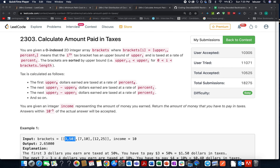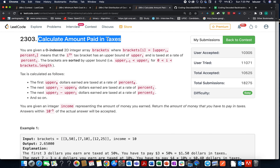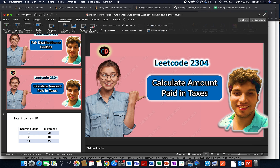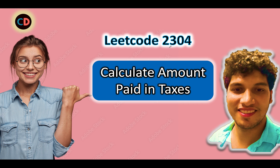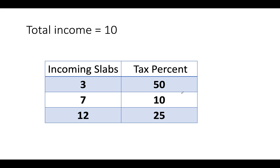Now let's solve the first question of the contest: Calculate Amount Paid in Taxes. This question exactly represents how taxes are calculated in India and we'll follow the same protocol. LeetCode 2303 — Calculate Amount Paid in Taxes. The total income of a person is 10 units, and we have income slabs: up to threshold 3 at 50%, threshold 7 at 10%, and threshold 12 at 25%.